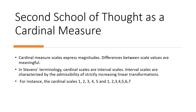The second school of thought treats Likert scale as a cardinal measure. Cardinal measure scales express magnitudes, and differences between scale values are meaningful, so we can use parametric assumptions. In Stephen's methodology, cardinal scales are interval scales, characterized by the admissibility of strictly increasing linear transformations.